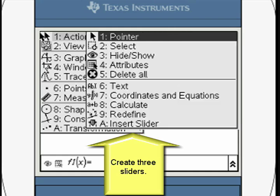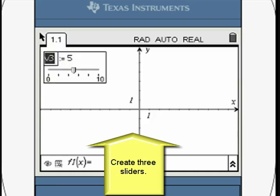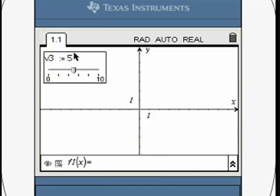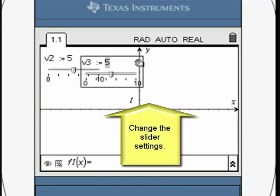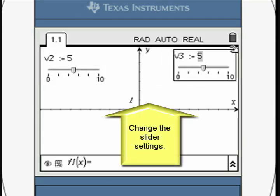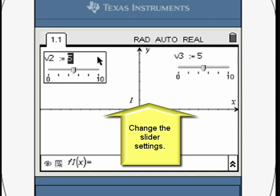Move each slider by placing the pointer over the slider till you see an open hand. Hold the click key till you see a closed hand. Use the nav pad to move the slider. Press Escape to release.